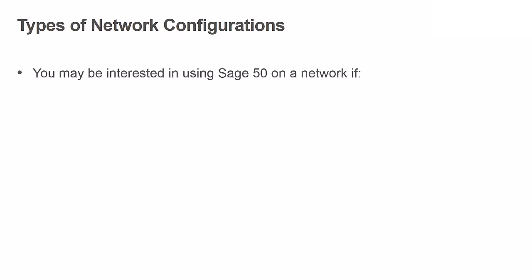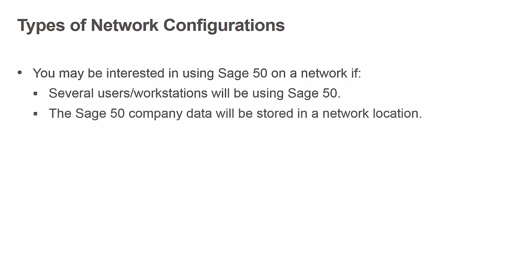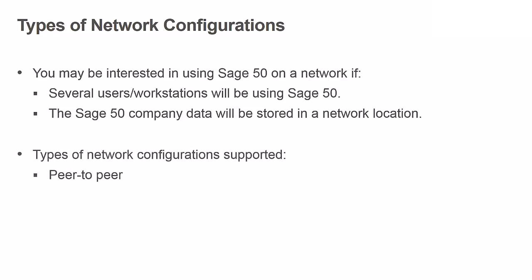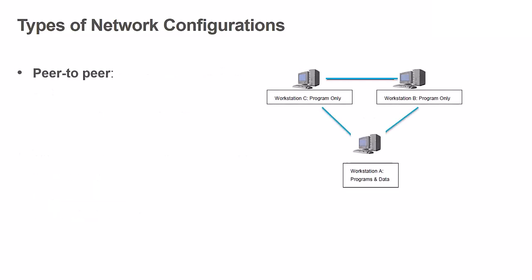Sage50 can be used on only one workstation or in a network environment. You may be interested in using Sage50 on a network if several users and/or several workstations will be accessing the Sage50 company data. The Sage50 company data will be stored in a network location. Three types of network configurations are currently supported: peer-to-peer installation, client-server installation, and terminal server installation. In the next few minutes, we will discuss each of these options.